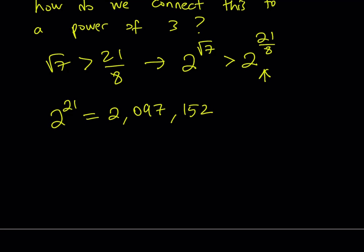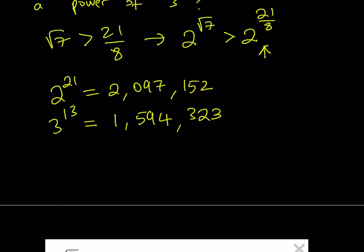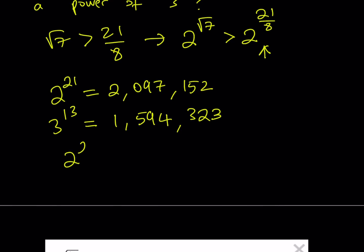And the closest power of 3 that I can use, and obviously I do want that to be a smaller number in this case because of the transitive property that I'm going to be using. So I will go with 3 to the power of 13, which happens to be 1,594,323. Great. So that's 3 to the power of 13, and that is 2 to the power of 21. Now I have that 2 to the power of 21 is greater than 3 to the power of 13.